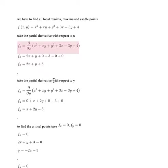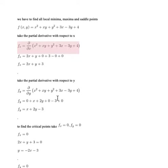Now taking the partial derivative with respect to y, the x variable is constant, so x² gives 0, xy gives x, y² gives 2y, 3x gives 0, -3y gives -3, and 4 is constant giving 0. So the partial derivative with respect to y is fy = x + 2y - 3.